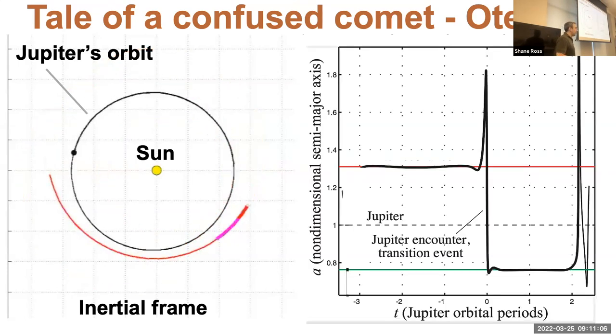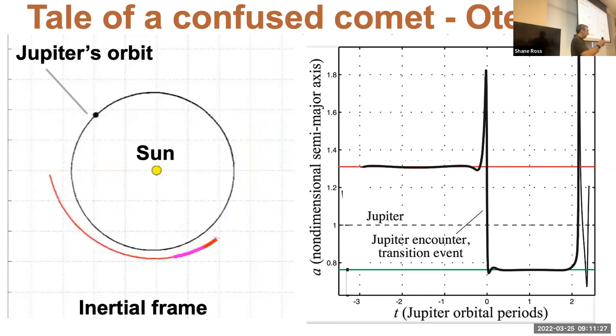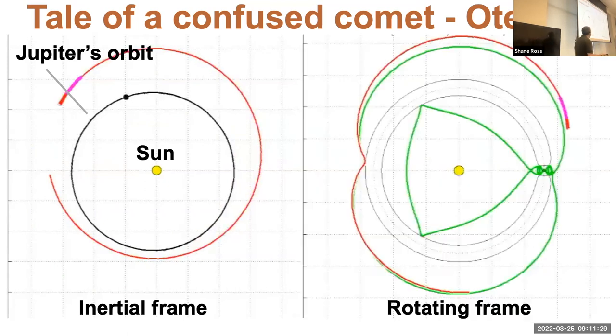If you look at the semi-major axis versus time, this defies two-body problem stuff. It goes from a high semi-major axis down to something low with weird peaks in between. This means it doesn't even make sense to look at a two-body problem with respect to the sun. Once you get close enough to Jupiter, you're under the influence of Jupiter, and there's a little time where maybe you're under the influence of both.